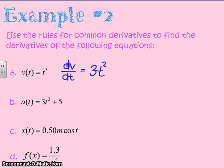Next we have the function a of t equals 3t squared plus 5. When we have addition or subtraction, we simply take the derivative of each portion by itself and then add together the derivatives.